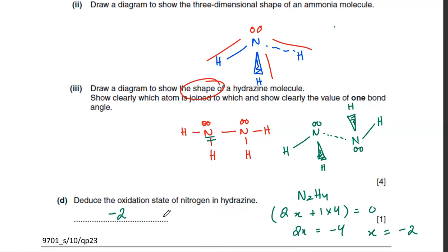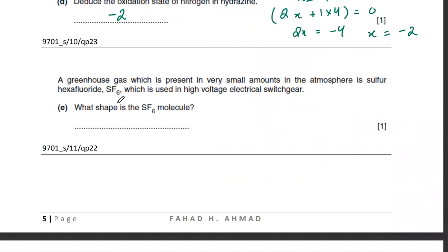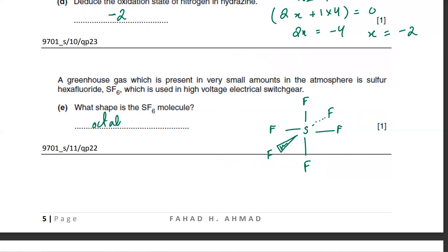For SF6, sulfur has six electrons and all six are used in bonding — no lone pairs. Six bonds gives an octahedral shape: one F on top, one at the bottom, one on the right, one on the left, one going behind, and one coming out of the page. The shape is octahedral.